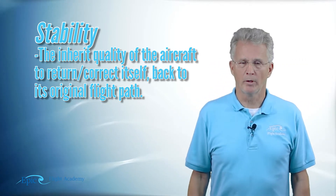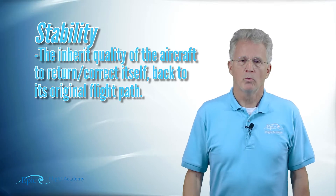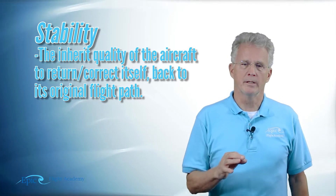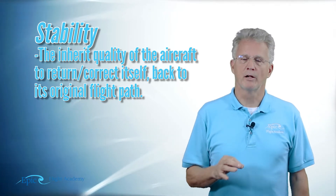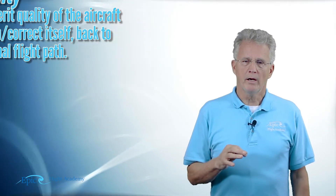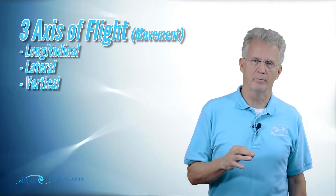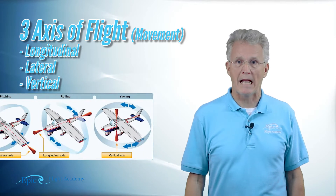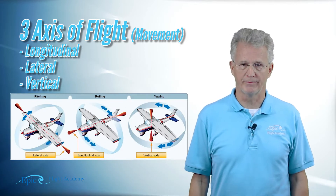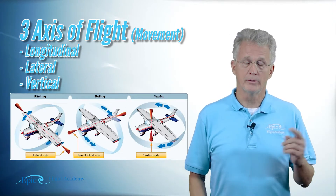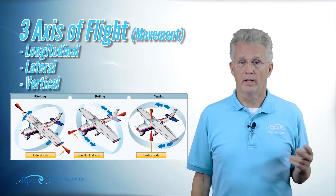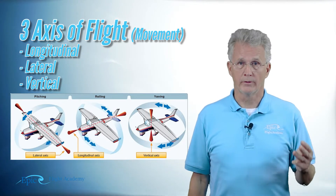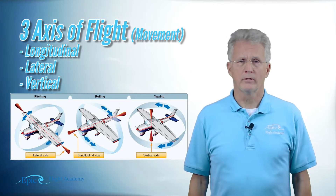To understand more about this, where we have to begin is the aircraft itself. The aircraft has three axes of movement, or sometimes we say three axes of flight. Those are the longitudinal, the lateral, and the vertical. Let's look at them.